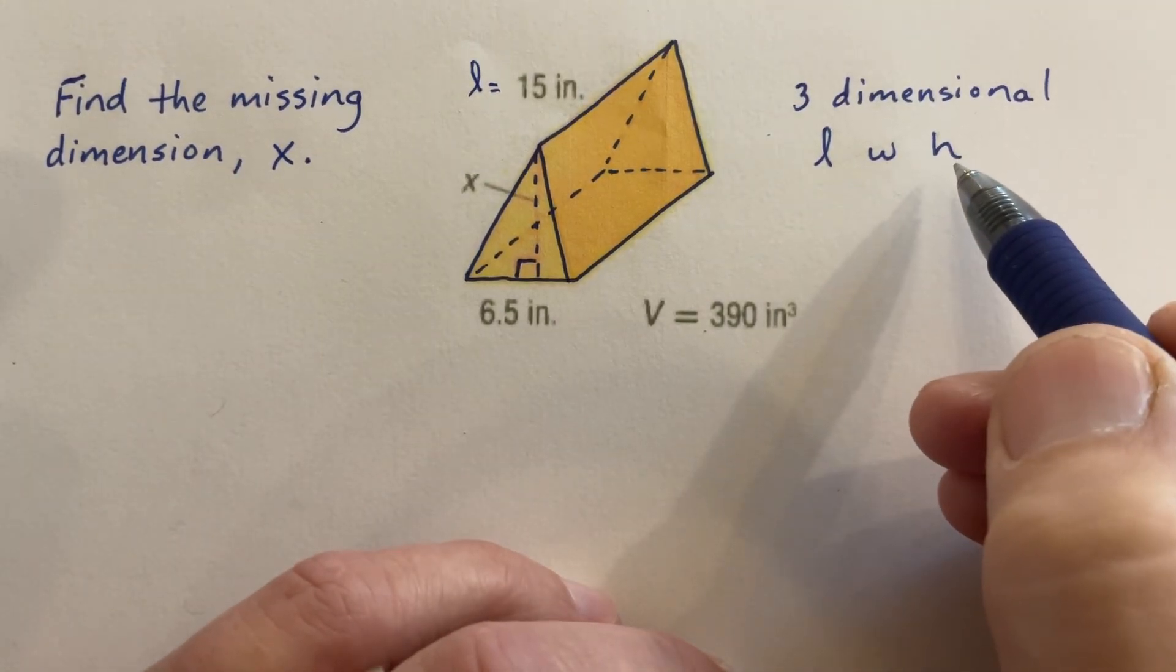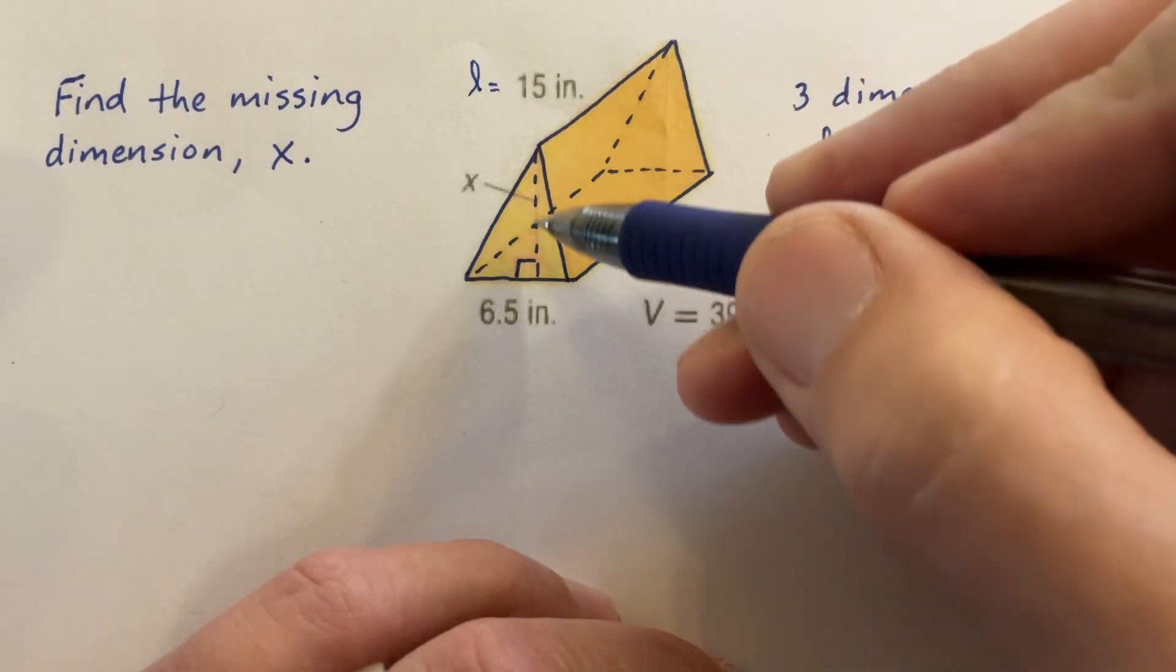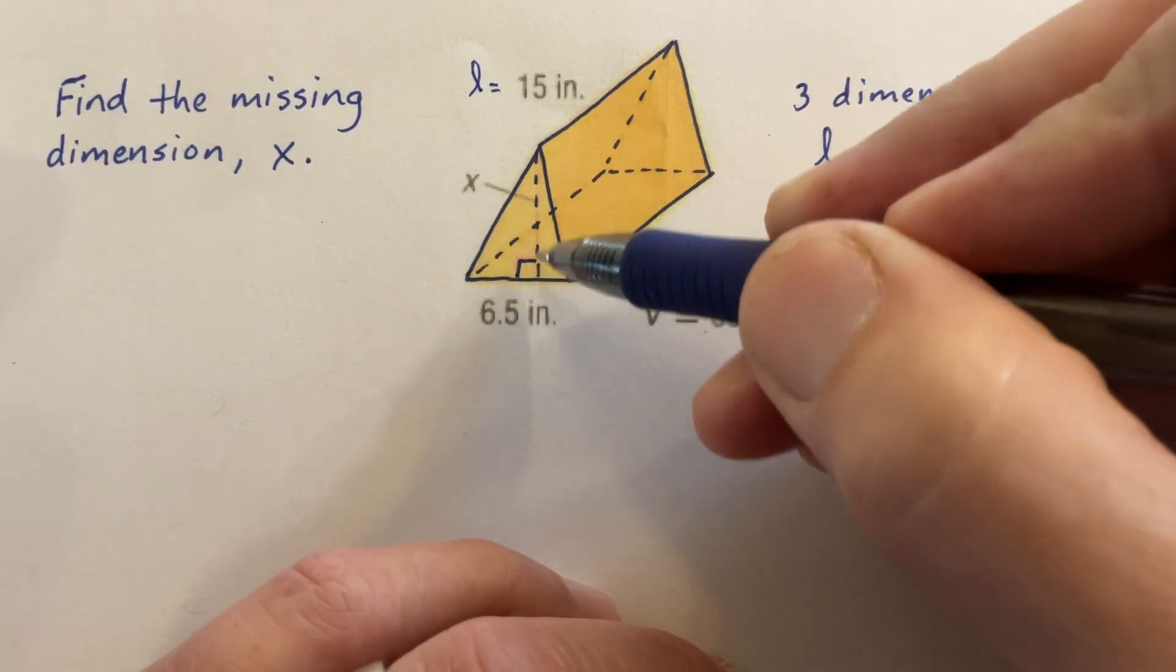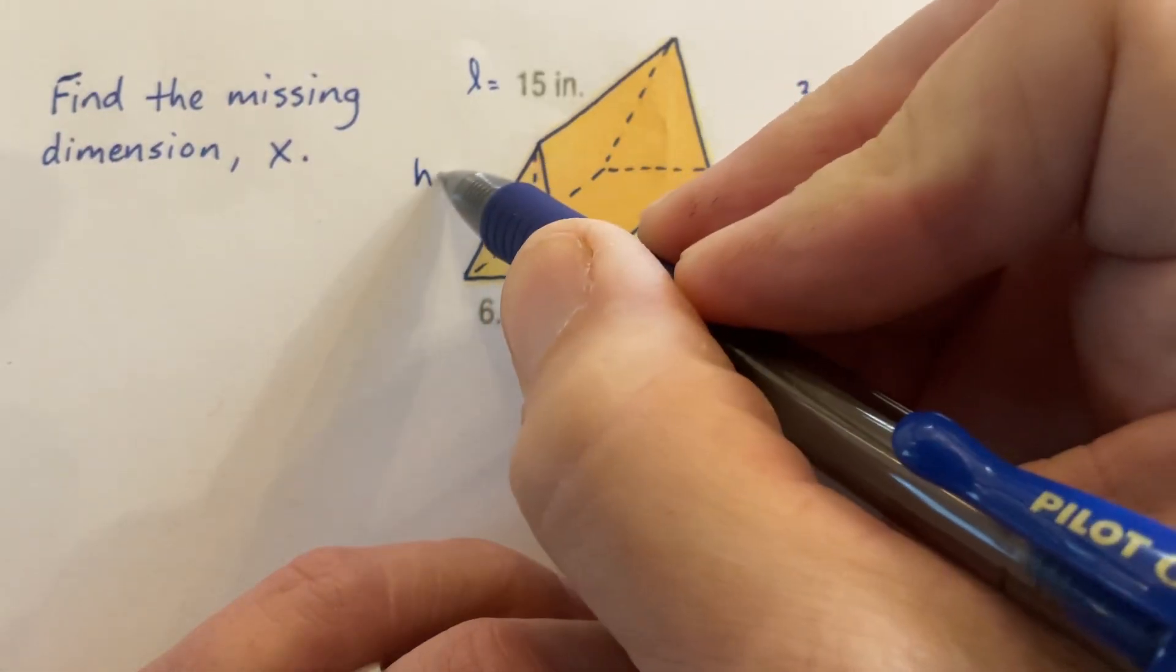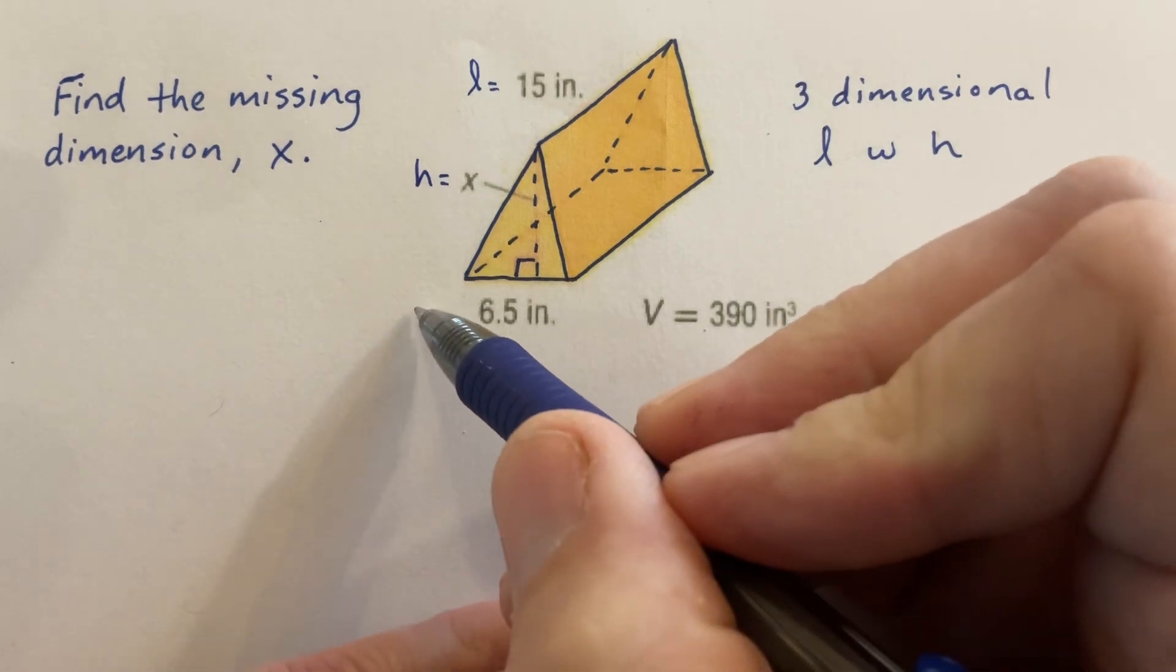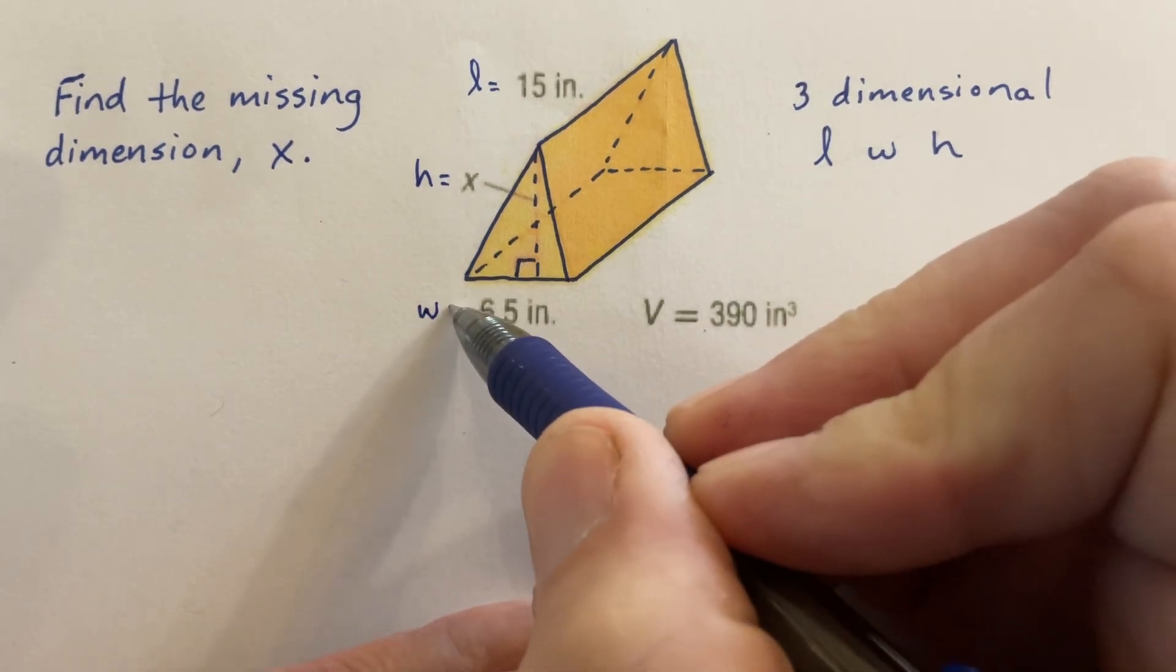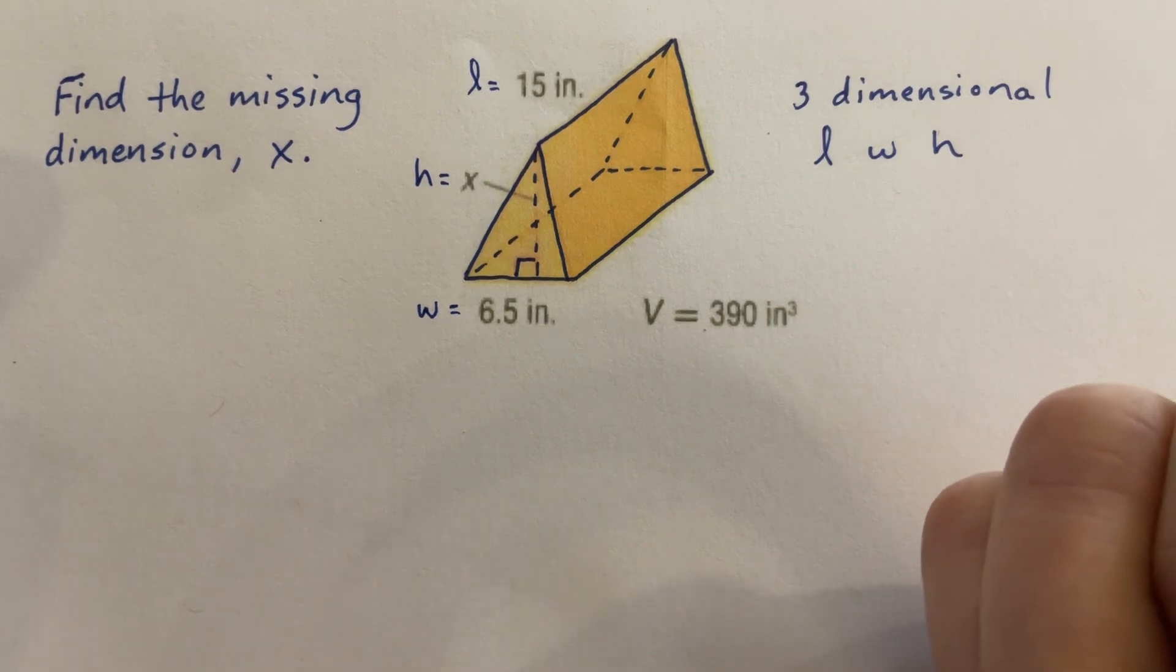I look for the height next because I know height is something that's measured in a vertical fashion. So this line right here is going to be the missing dimension, the height. X here is the height. This is what we're going to need to find when we solve the problem. The width is going to be this last dimension here, 6 and 1/2 inches or 6.5 inches.